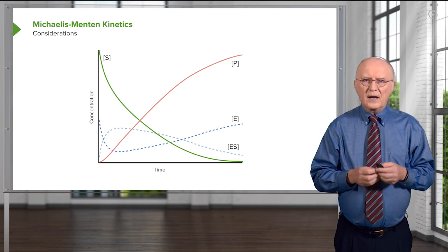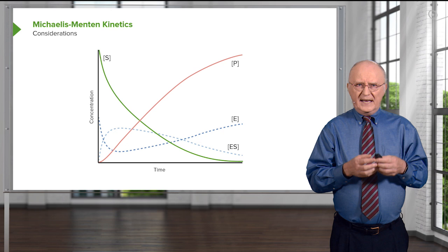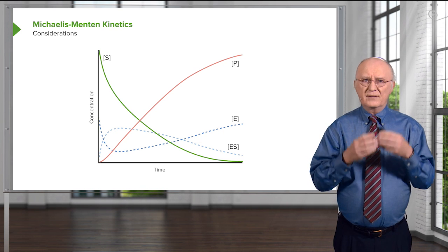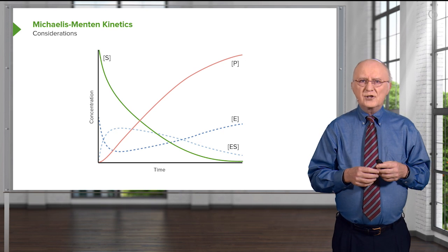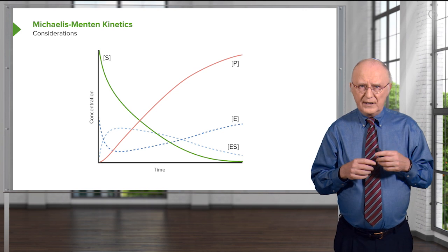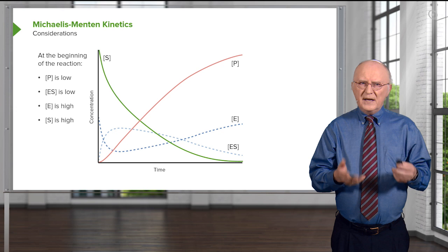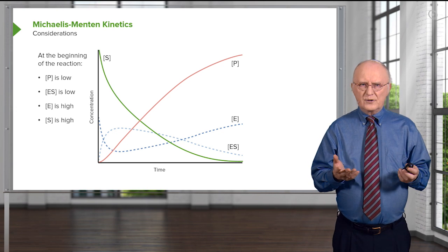We can see here that on the y-axis, again, we have concentration, and on the x-axis, we have time. And before, we saw simply the accumulation of product as shown in the orange icon here. At the very beginning of a reaction, what are the circumstances?